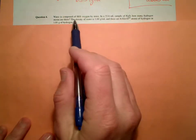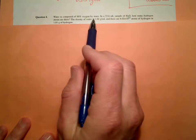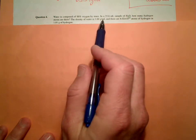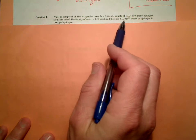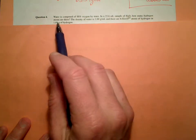Okay, this water one. Water is composed of 88% oxygen by mass. In a 23.6 milliliter sample of water, how many hydrogen atoms are there?